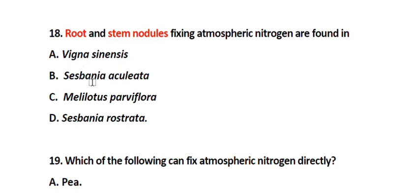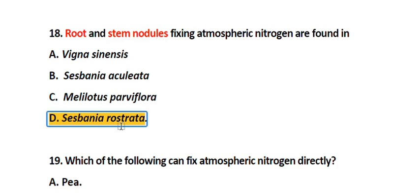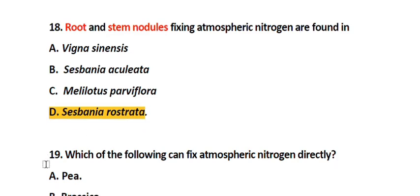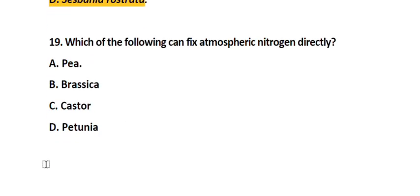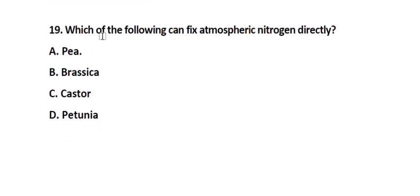Question number 18. Both root and stem nodules are found in: Option A. Sesbania aculatia, Option B. Sesbania aculatia, Option C. Melilotus parviflora, Option D. Sesbania rostata. The correct answer is Option D. Sesbania rostata. Both root and stem nodules are found in Sesbania rostata.